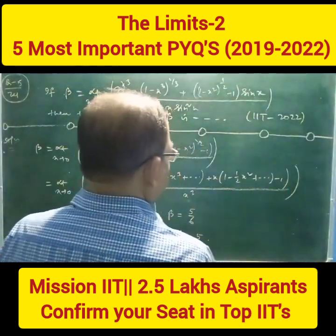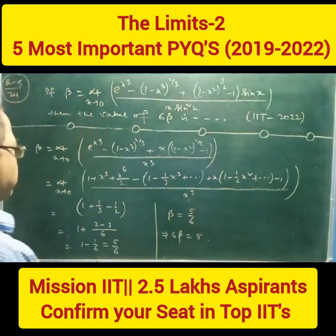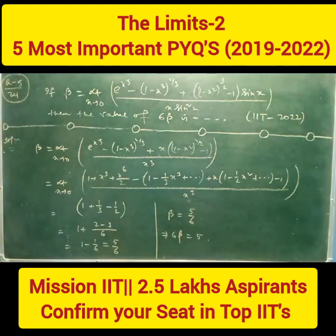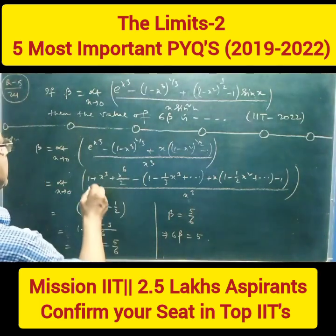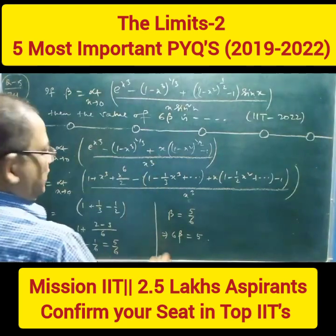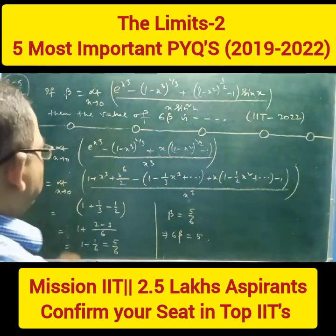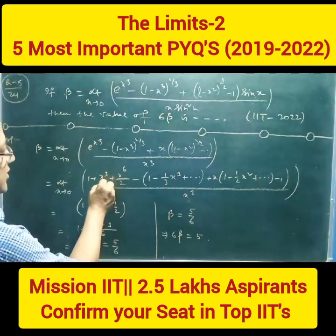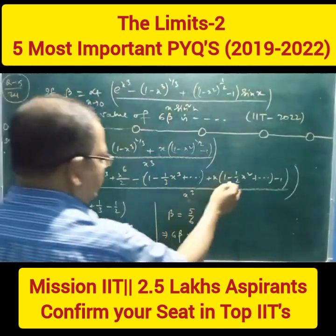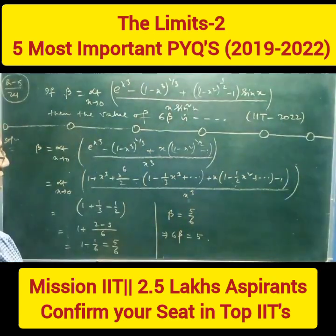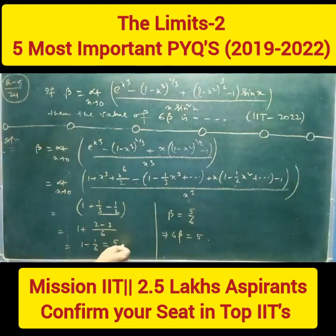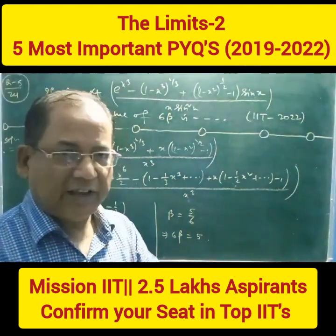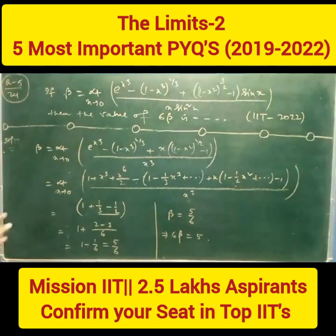So, e hi p kya karna hai dekho. The e part — the 1s cancel. Now e hi pe x cube chahiye; x cube ke liye kya hai: this is 1, this is plus 1 by 3, minus 1 by 2. So here x cube cancel ho gya, and we will get 1 minus 1 by 6, so that is equal to 5 by 6. So beta equal to 5 by 6, so 6 beta is equal to 5.